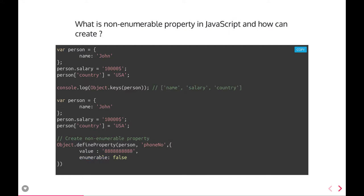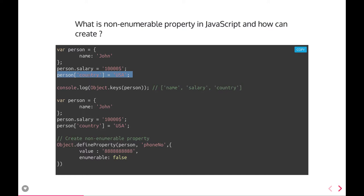When we do Object.keys, it gives you an array of enumerable properties. Creating properties in JavaScript is easy — the person object already has a name property, and we can add salary and country, giving us three properties. We can also add a phone number property using defineProperty with enumerable set to false; configurable will be true by default.